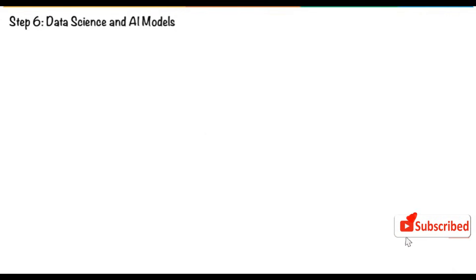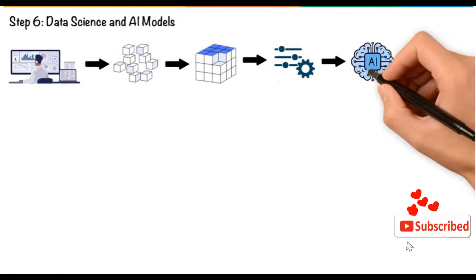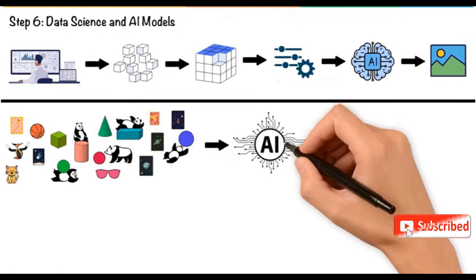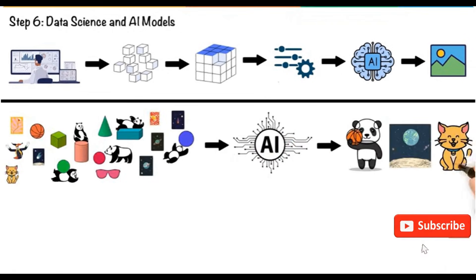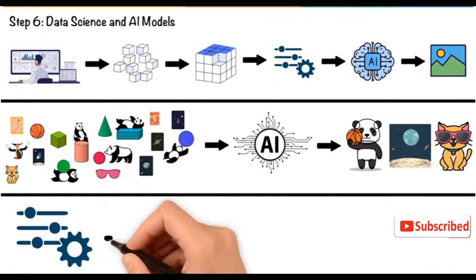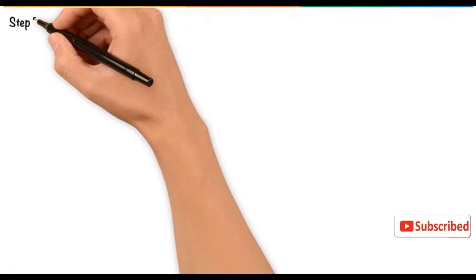Data Science and AI Models: Data scientists curate the training data and define the parameters that help the AI generate accurate images. The more varied the data set, the more versatile the AI becomes in generating diverse types of content. Advanced models use billions of parameters, which are settings that guide the AI in processing data and generating outputs.